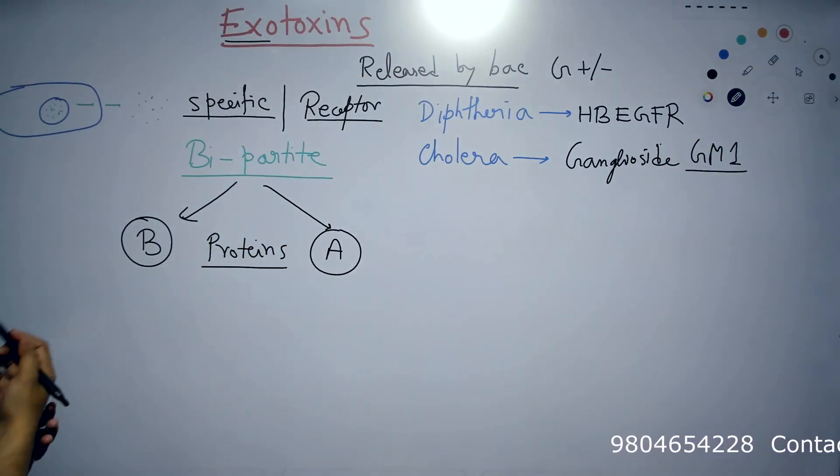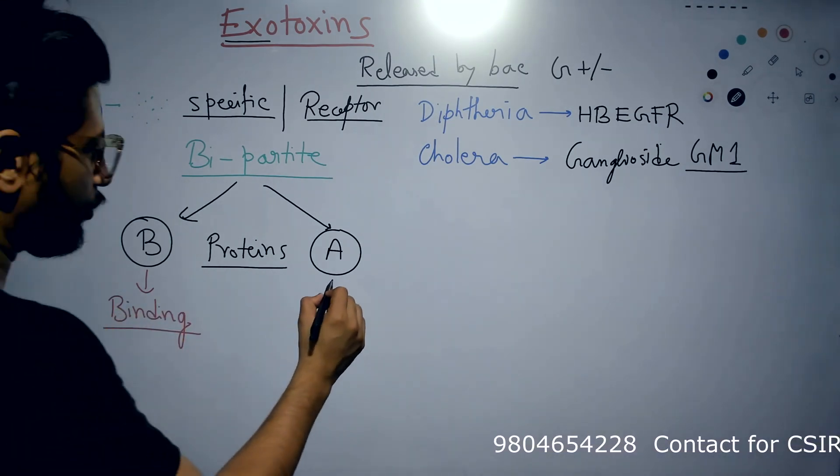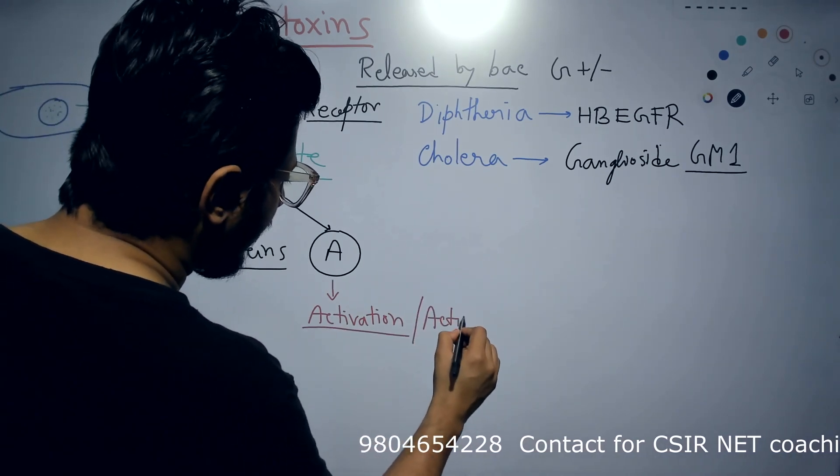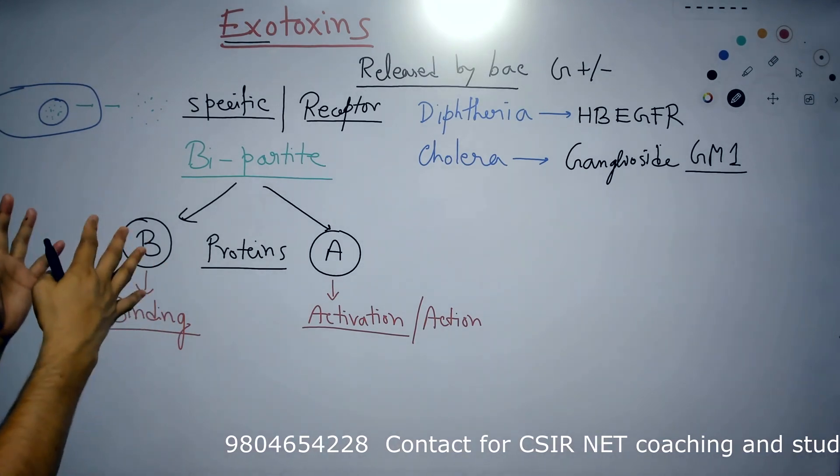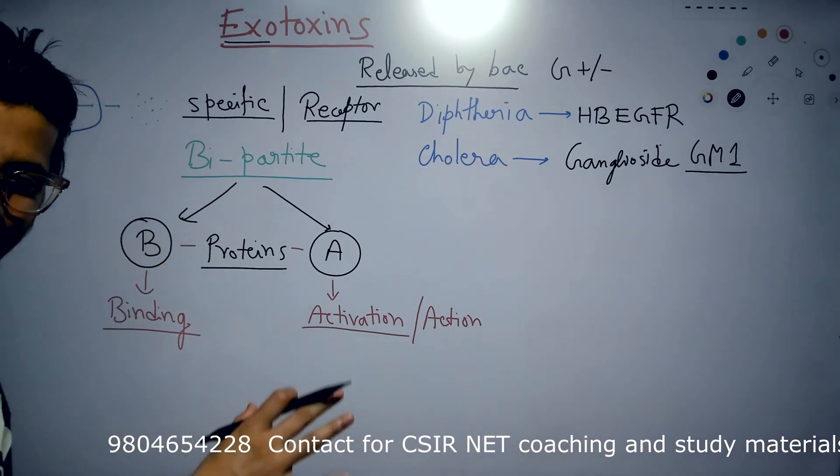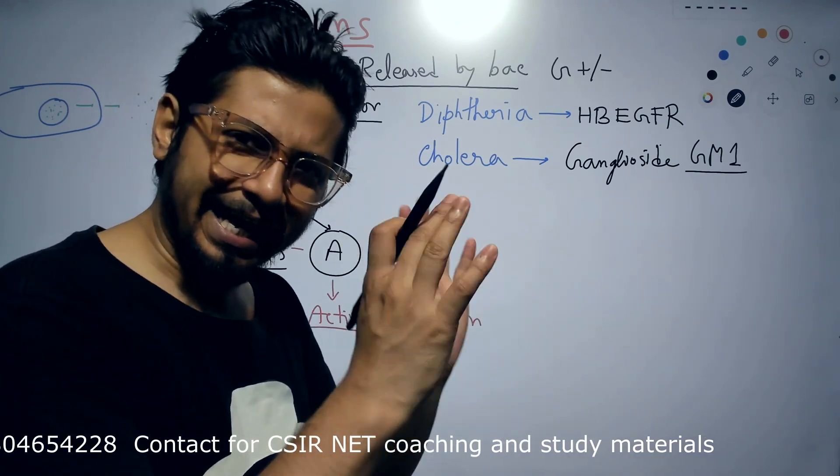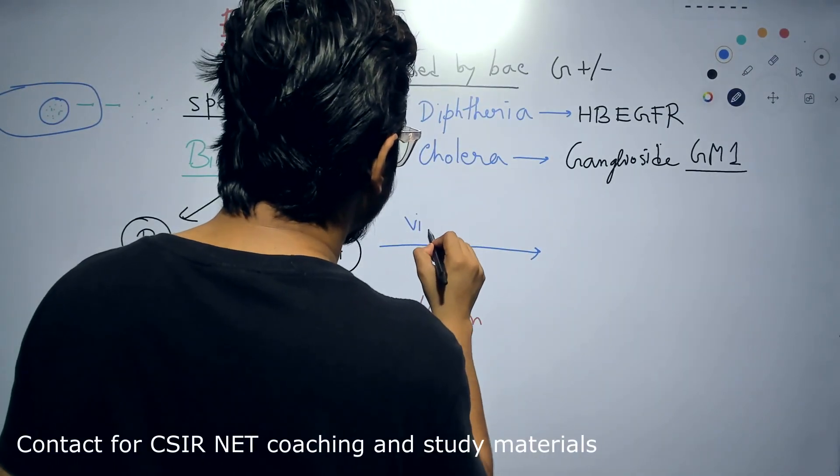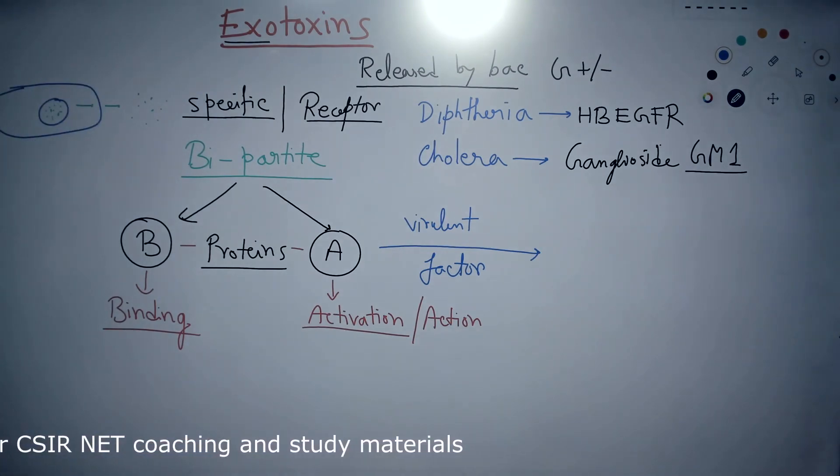But they have different roles to play. For example, B has a role to play. What kind of role? Binding. The role of binding. And A has a role of activation and action. The actual action to the cell will be done by A unit, but B does the job of binding. It is very important that B remains associated to A before the A is released inside the host cell. B's job is to escort the A part, the active part of the exotoxin, to the host cell. It will introduce it to the host cell, and then A will do the damage. And we know these toxins are nothing but virulent factors, virulent factors of bacteria.